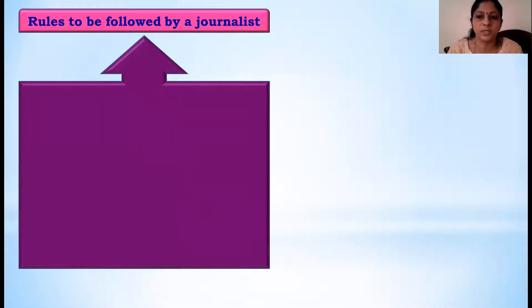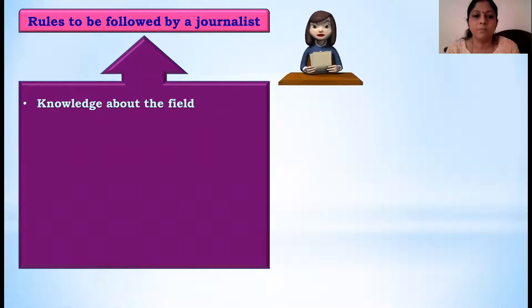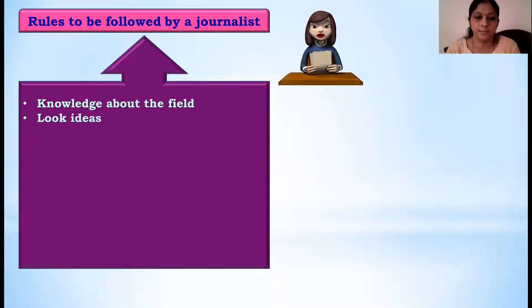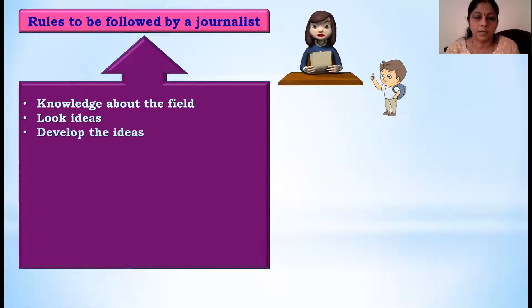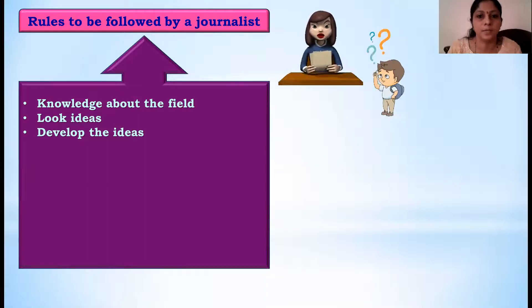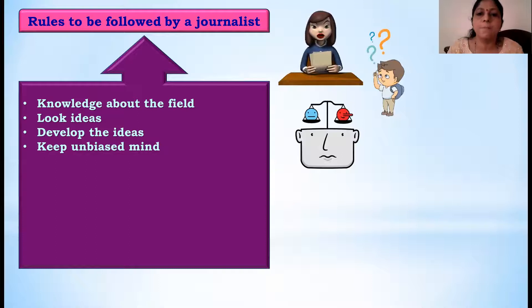What are the rules to be followed by a journalist to be a good journalist? The first rule is they must have complete knowledge about the field - they should be technically sound. Anybody cannot become a journalist; they must have basic knowledge about the principles and ethics of journalism to do good journalism. They should look for ideas - not everything can be presented as important news. They should look for the idea that should be presented as good information for the public, and once they find the idea, they should develop it. The information as it is cannot be presented to the public; it has to be modified based on the requirement of the people. And always there should be an unbiased mind.